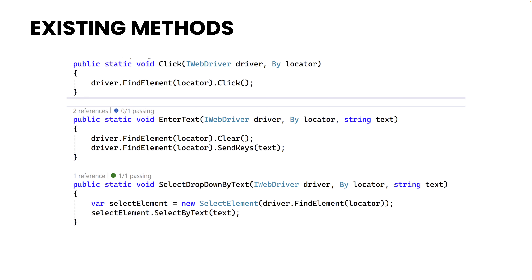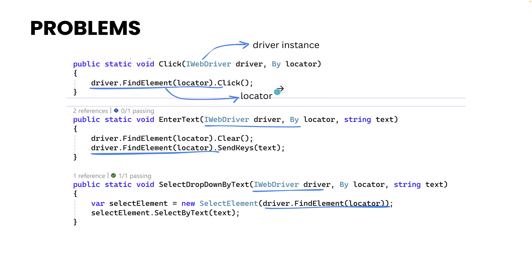As you can see, our method comes with some common parameters like the driver instance of the IWebDriver, and also it has the driver.FindElement to find the locators. We can get rid of all these things right now because we also have the locators in one single place in our page object model code, so we can get rid of all of them into a very simplified version of the code.